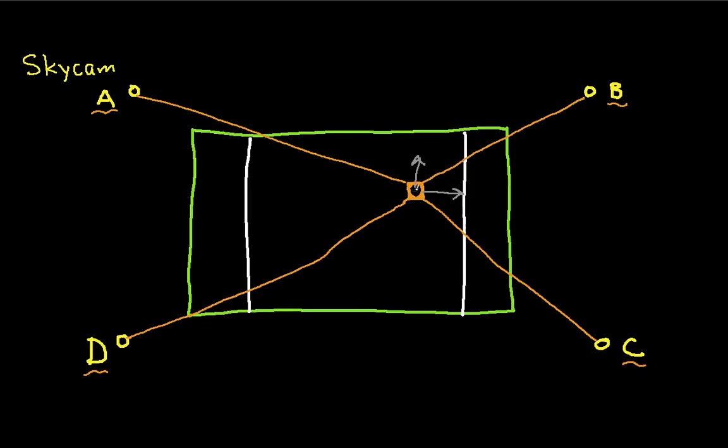What we'll do is we'll consider the SkyCam to be a point, which for the purpose of this example is fine. For other examples, if you want to understand the dynamics of the camera itself, how it twists and turns, this probably wouldn't be a good example. But we'll assume that the camera can be represented as a single point, and that each of the cables between the camera and A, camera and B, camera and C, camera and D, exert a force on the camera. That's the problem we're going to solve.